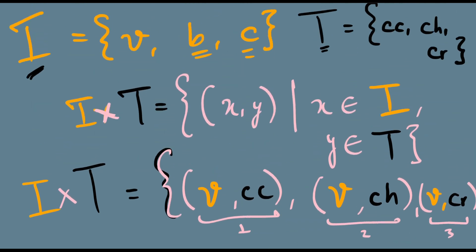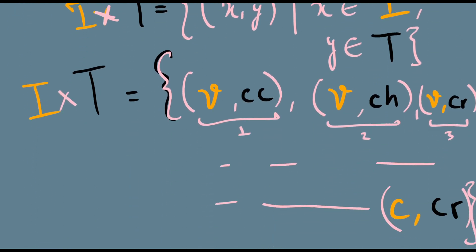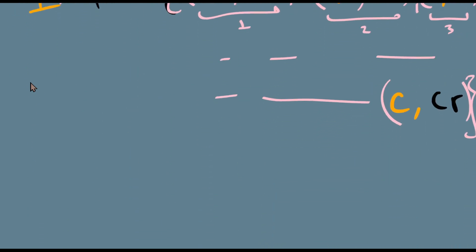So how many elements in total? This is what I did: I multiplied I and T together. I took the first element in I and wrote it down with all three elements. Then with the second element, I used these three elements again. With the third element, I used these three elements again. So the number of elements in I cross T would be the number of elements in I times the number of elements in T.